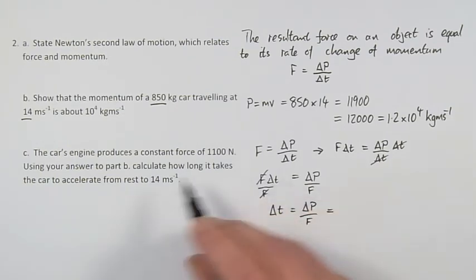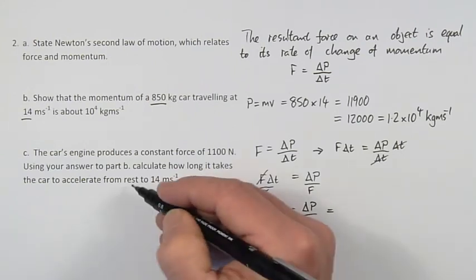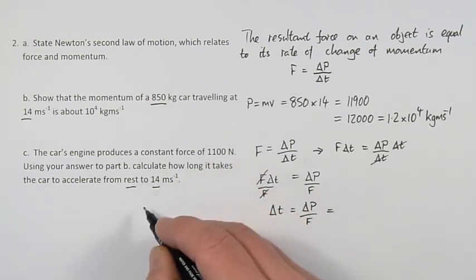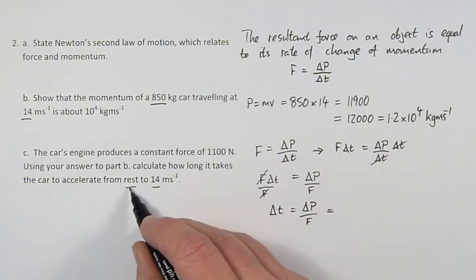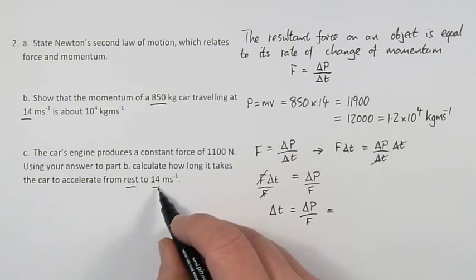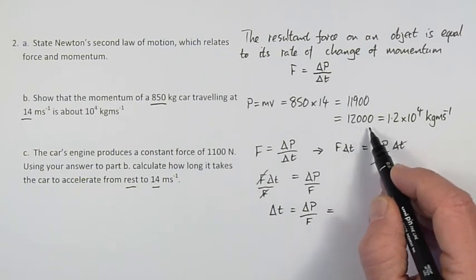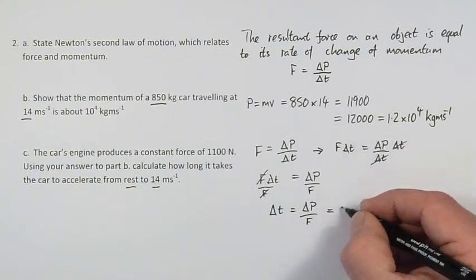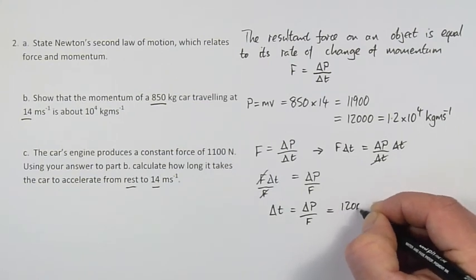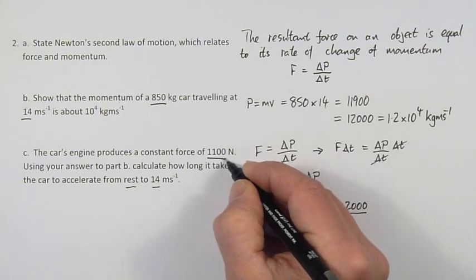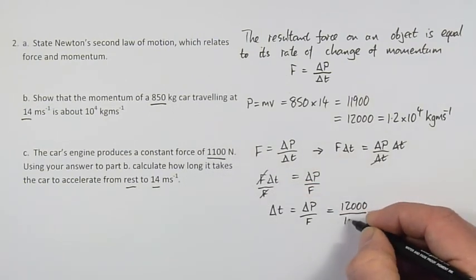Now the change in momentum, we are going from rest to 14 meters per second. So at rest it has got no momentum. At 14 meters per second, we calculated the momentum before which was 12,000. So the change in momentum is 12,000. The force is given here, 1,100 newtons.